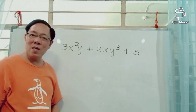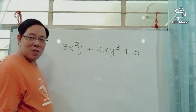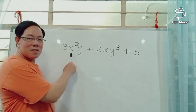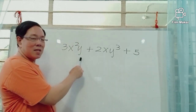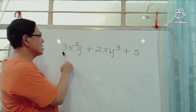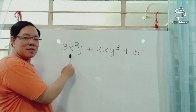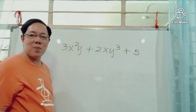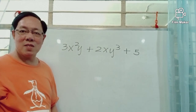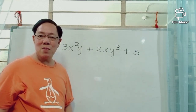A trinomial is an algebraic expression with three terms. As you can see in this algebraic expression, we have the variable x, the letter y, and the numbers 3, 2, and 5. The letters x and y are called variables, and they represent some numbers. They are called variables because their values may vary.